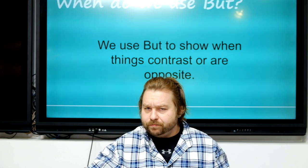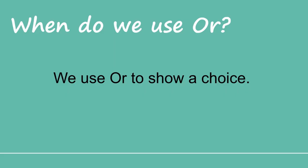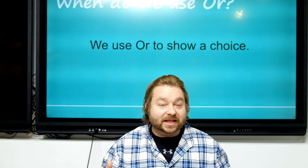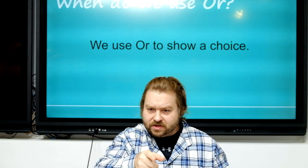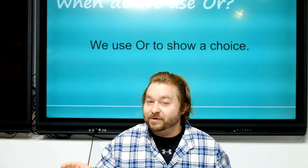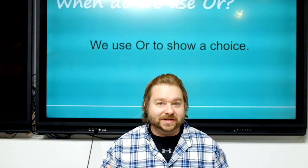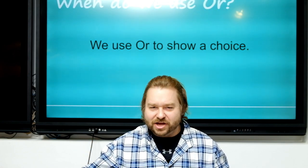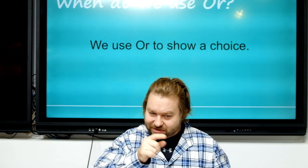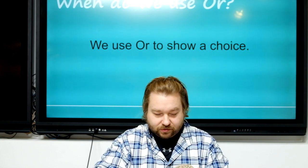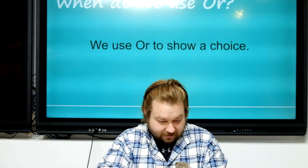What about 'or'? 'Or' shows a choice. I always remember 'or' when mom would say, 'Do this, or this happens' — some kind of consequence. You have a choice: do this, or something bad happens. Those are your two choices.